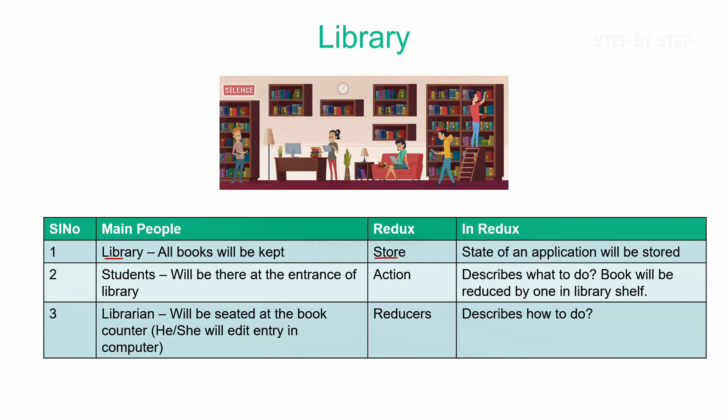Now the student — what will the student do? The student will go inside the library. The student can either borrow the book, return the book, read the book, or sit inside the library. Basically they are just doing things. So these students will be compared to actions. Now what will actions describe? They just tell what to do. In our example, the student wants the book, so student will take the book — borrowing the book will be our action.